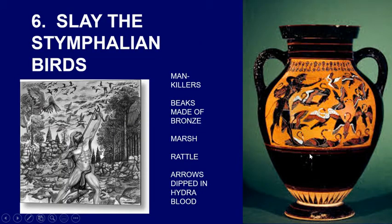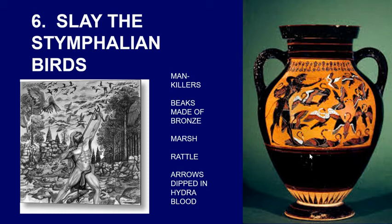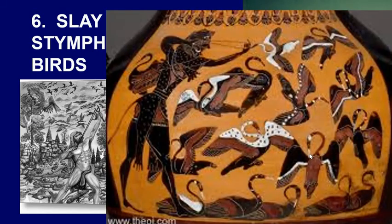Another task was to slay the Stymphalian birds. These were man-killers — they had beaks made out of bronze — and the marsh where they lived was so soft on the ground that Heracles could not walk through it. Athena helped him by giving him a rattle, which caused the birds to leave their nests in the marsh and fly out into the sky. He killed them with arrows dipped in Hydra blood. In these pictures it looks like he used a sling.